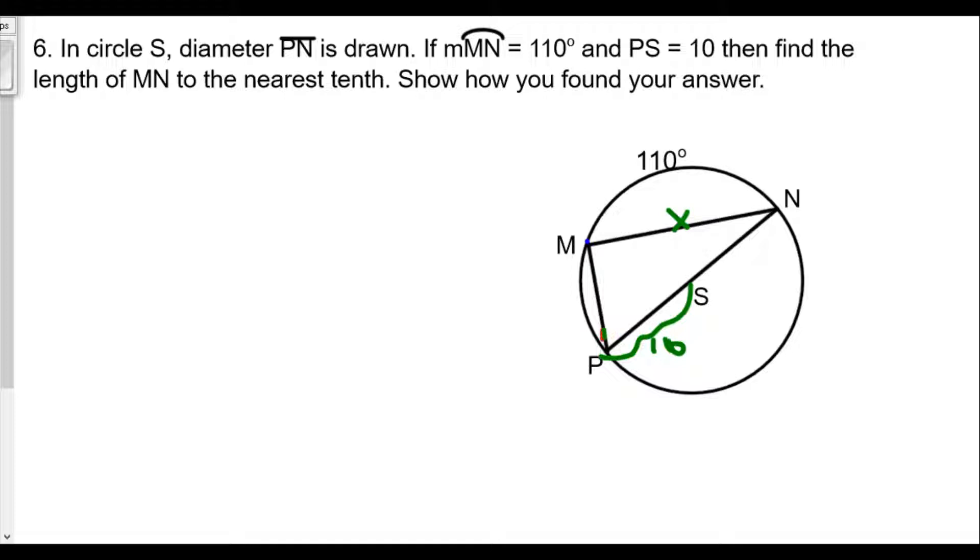we should know that since angle PMN has to be 90 degrees, because if an inscribed angle intercepts the diameter of a circle, it is going to be a right angle. Because of course, arc PN is 180 degrees, one half of 180 is 90.